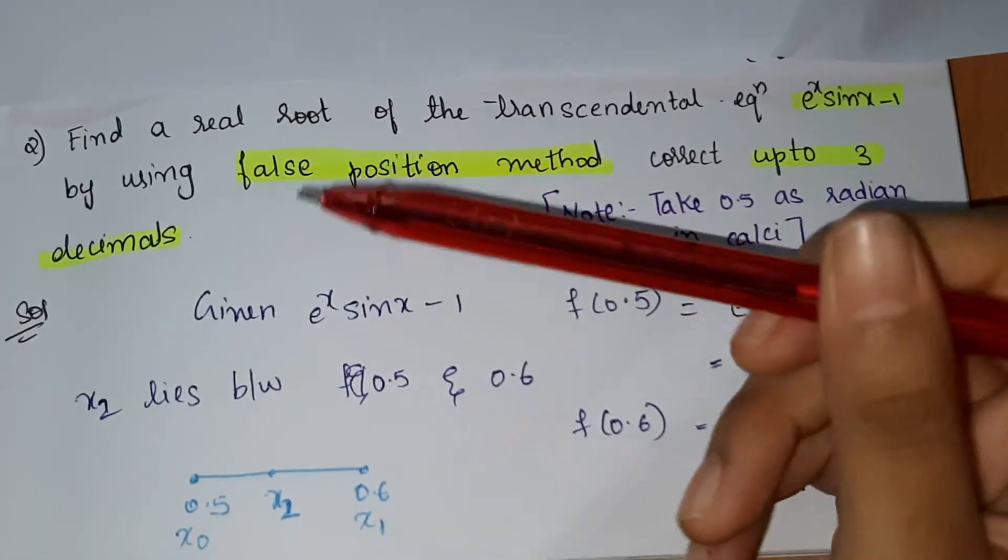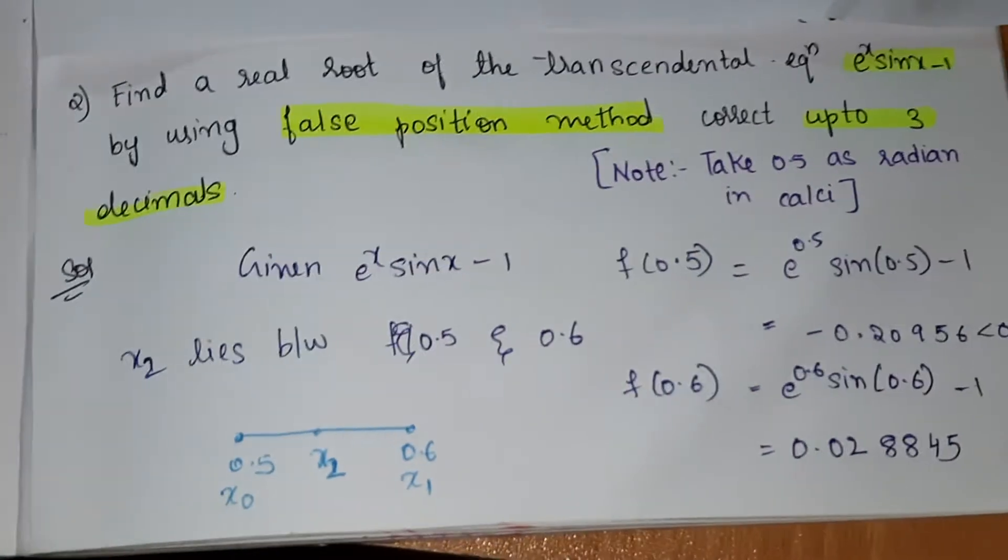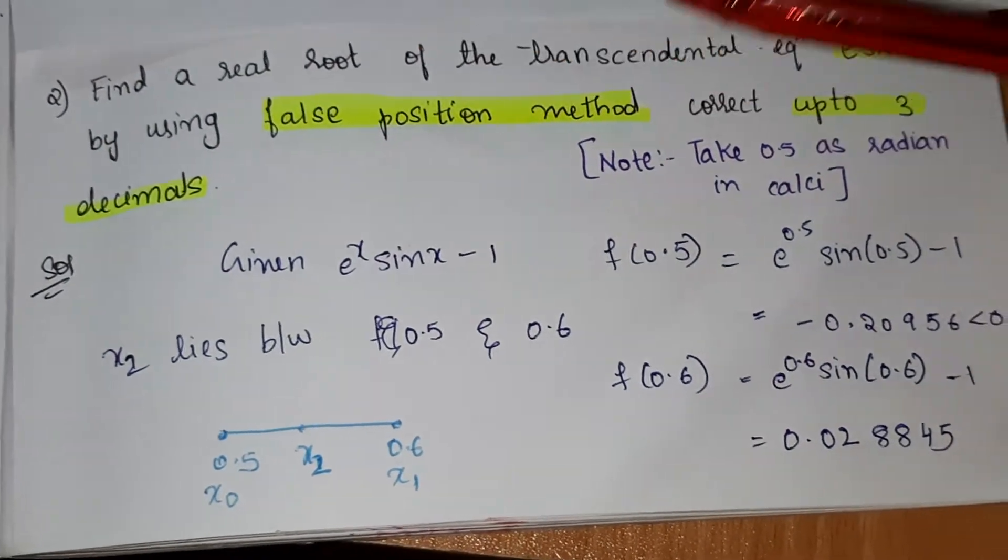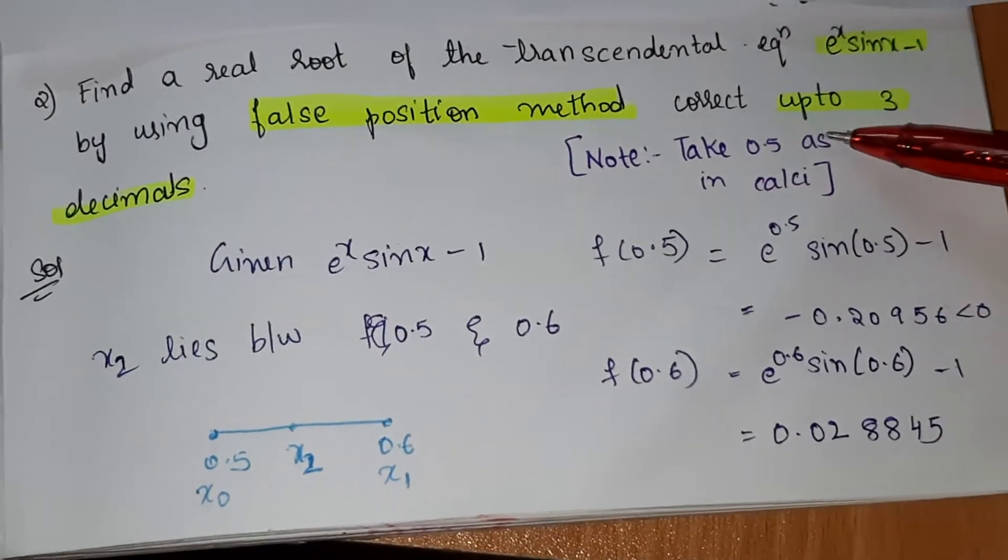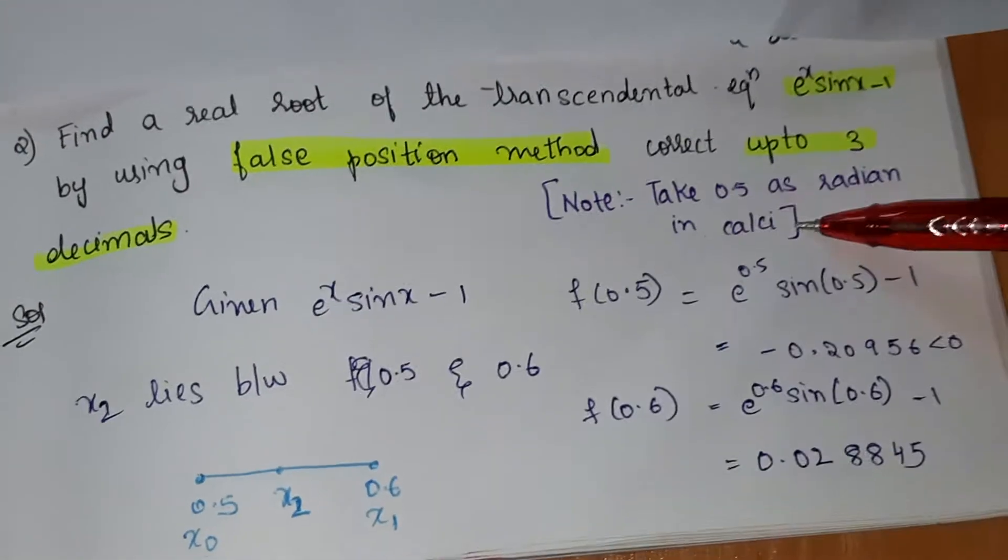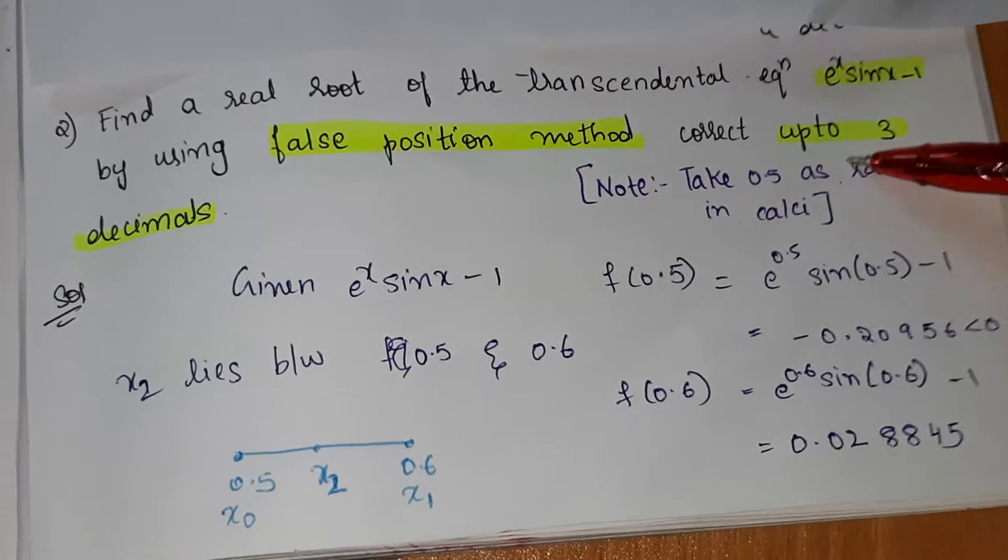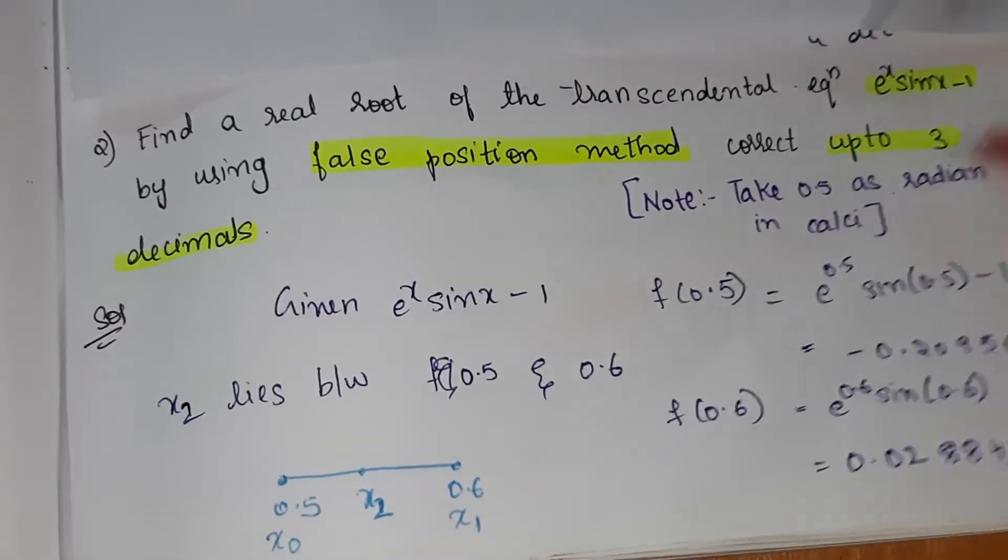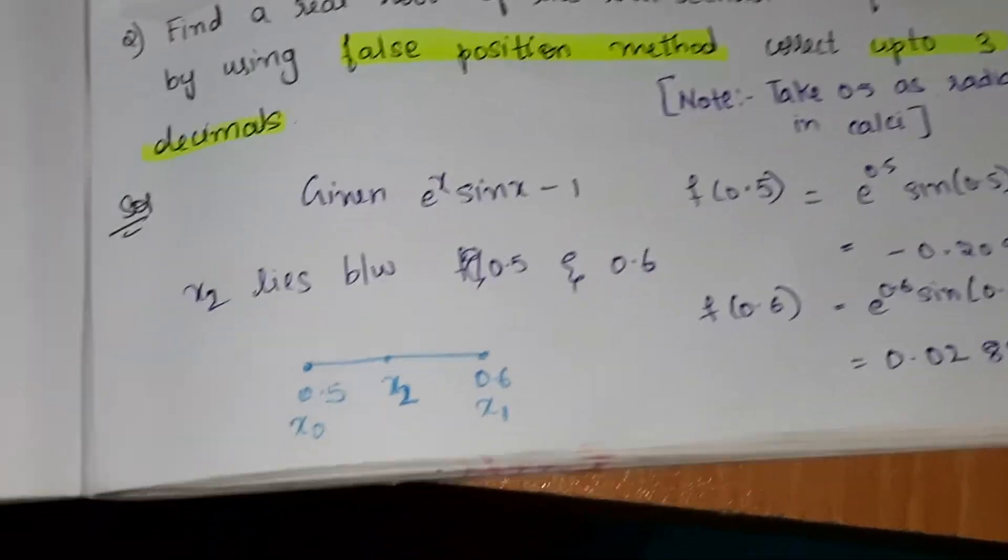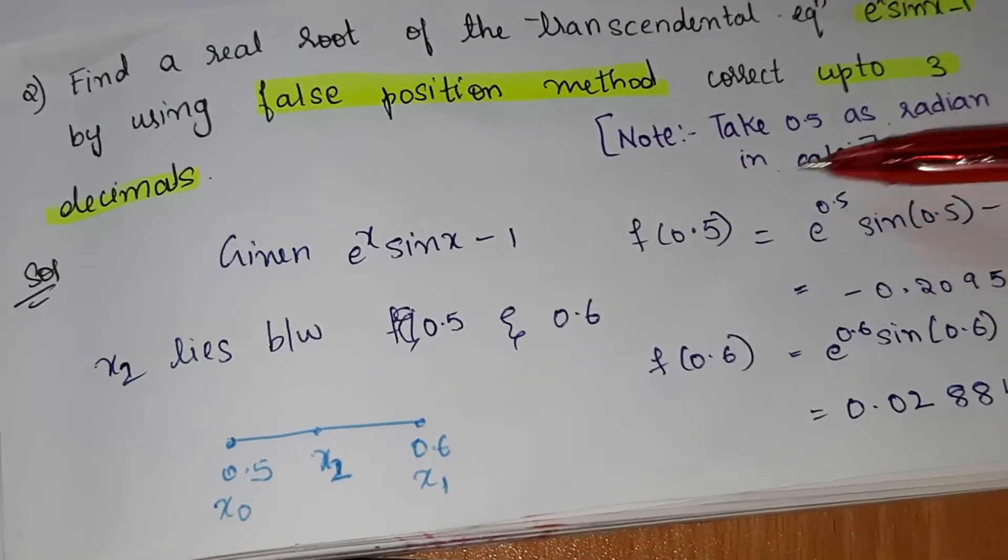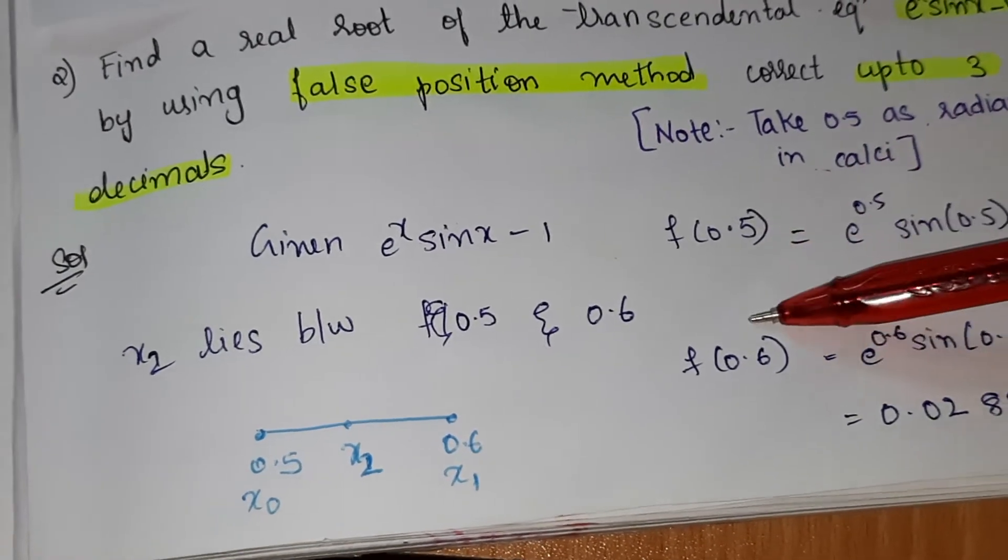Hello guys, in this video I'm going to explain another problem using the Regular Falsi method. Remember, you have to take the value in radians every time. I have taken the a value and b value as x0 and x1.